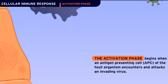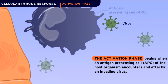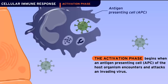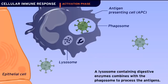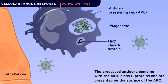The activation phase begins when an antigen-presenting cell of the host organism encounters and attacks an invading virus. A lysosome containing digestive enzymes combines with the phagosome to process the antigens. The processed antigens combine with the MHC class II proteins and are presented on the surface of the APC.